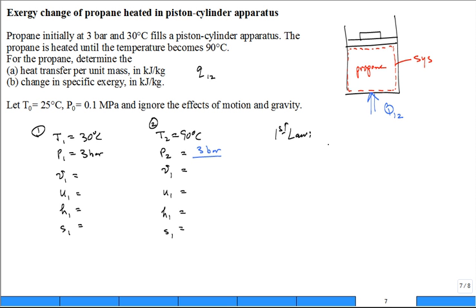And the first law is written as U2 minus U1 plus any changes in kinetic plus any changes in potential, which for this problem you can see are negligible. It's just gas trapped. It's not propane flying in the air or propane changing elevations. It's equal to Q 1 to 2 minus work 1 to 2. So is Q 1 to 2 equal to U2 minus U1? Did you just get U2 minus U1? Something's missing.